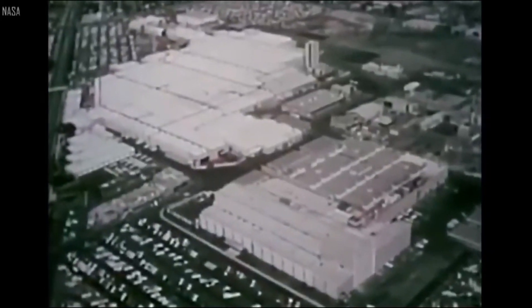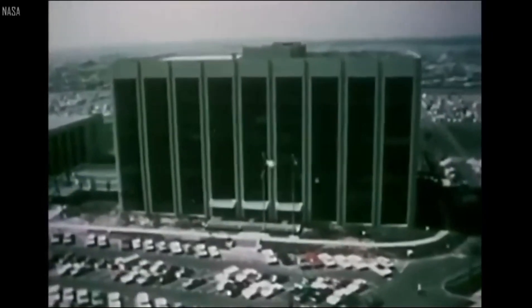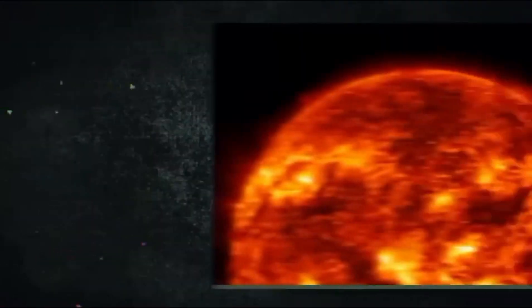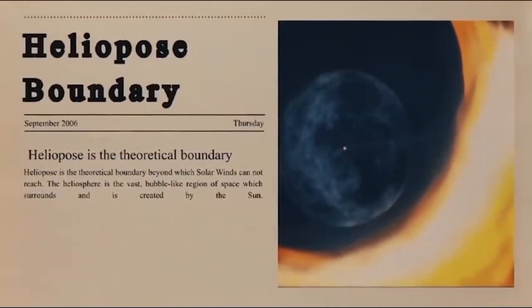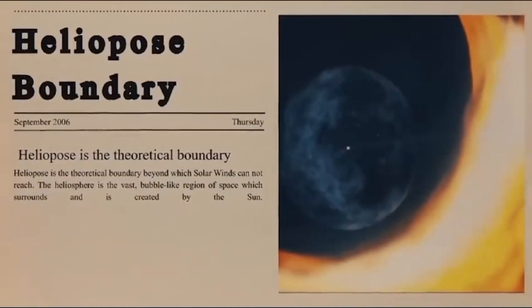Voyager 2, crossing the heliopause in 2018, confirmed the increased particle density and higher temperatures, challenging earlier beliefs about the heliosphere's strength. As these spacecraft journey further from Earth, they continue to transmit valuable data, offering unprecedented insights.